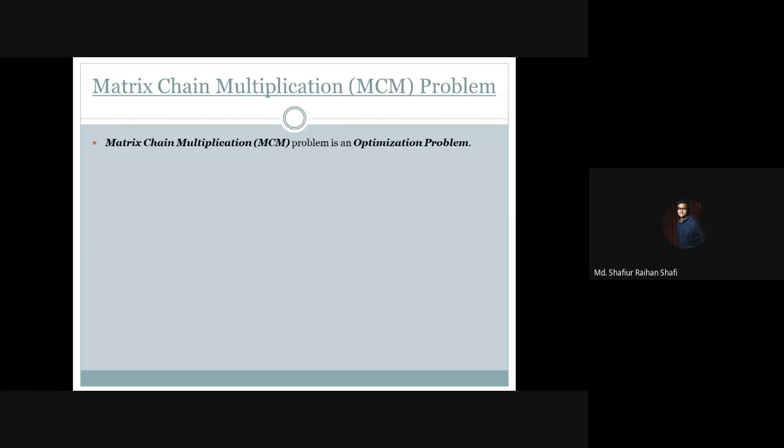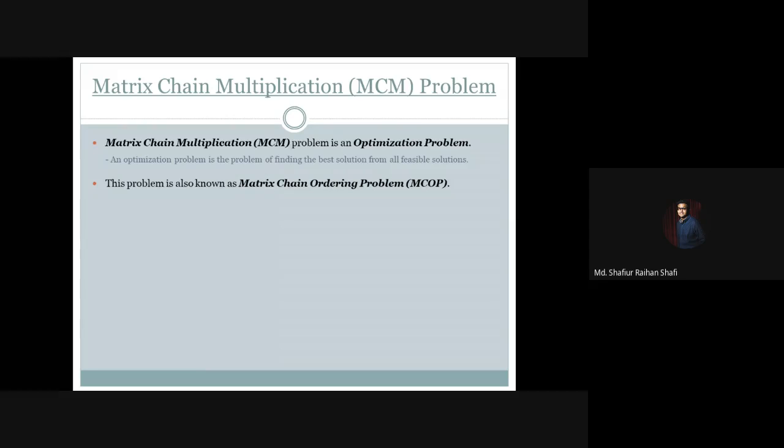Matrix Chain Multiplication problem is an optimization problem. Now what is an optimization problem? An optimization problem is the problem of finding the best solution from all the feasible solutions — among all feasible solutions, finding the best one is called an optimization problem.